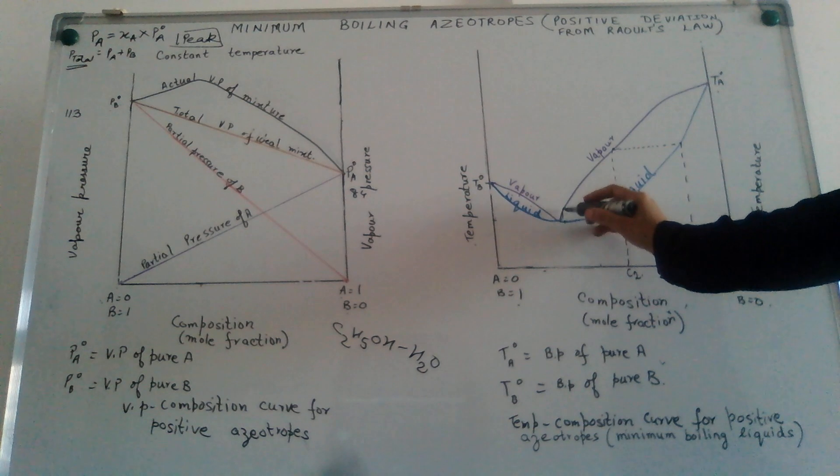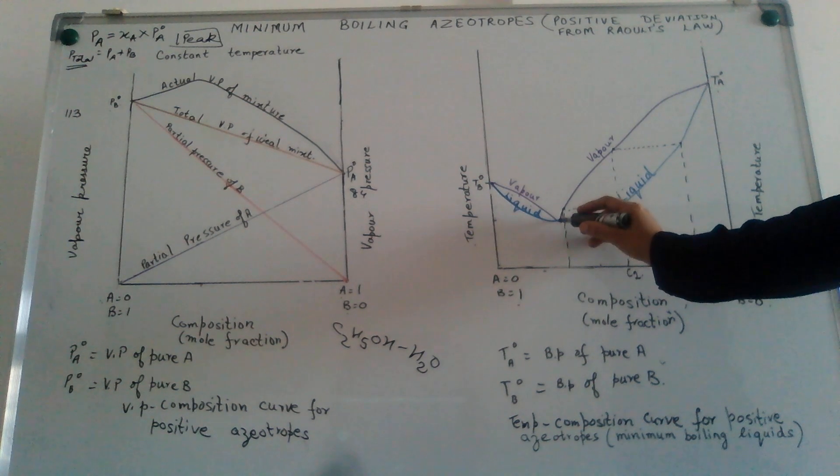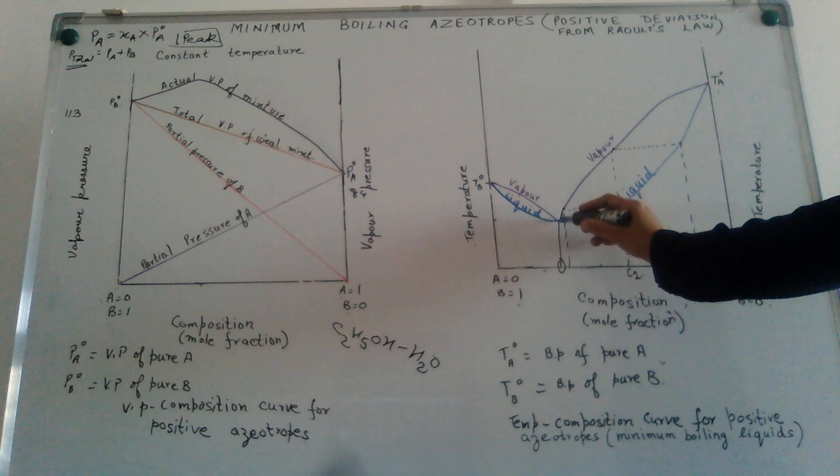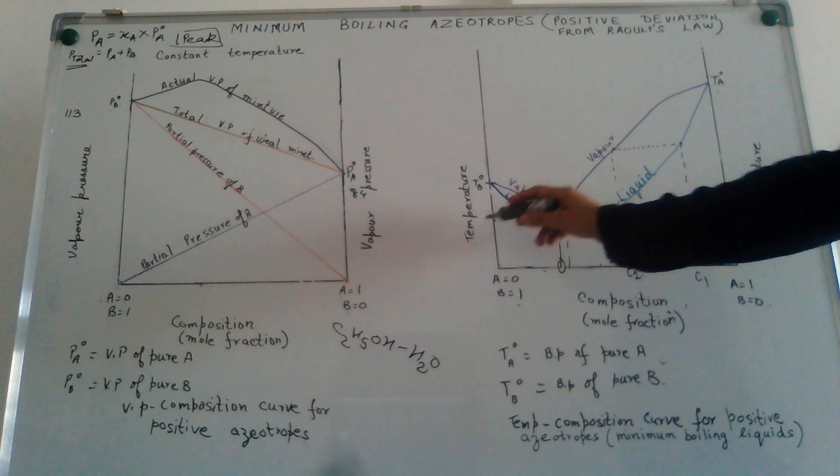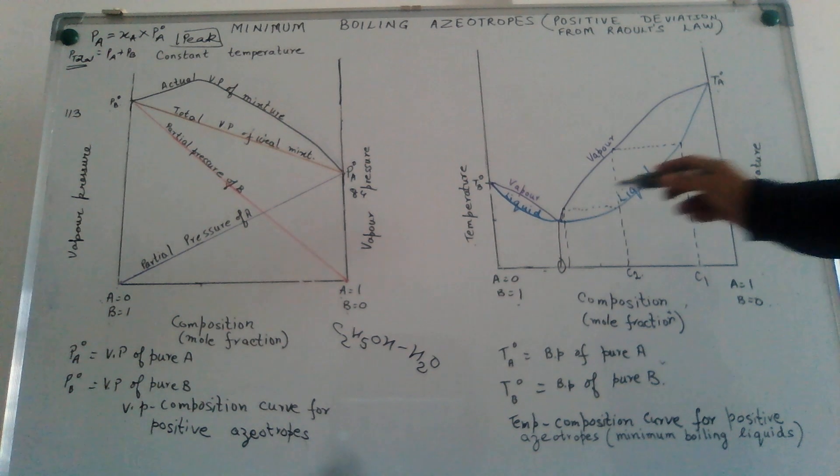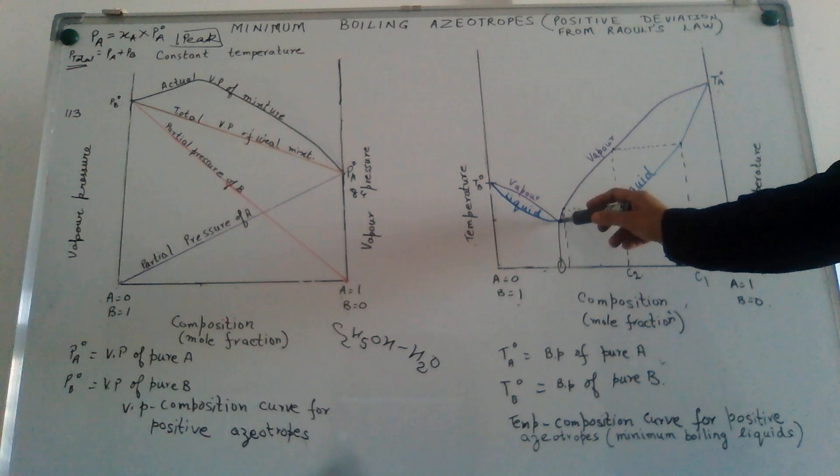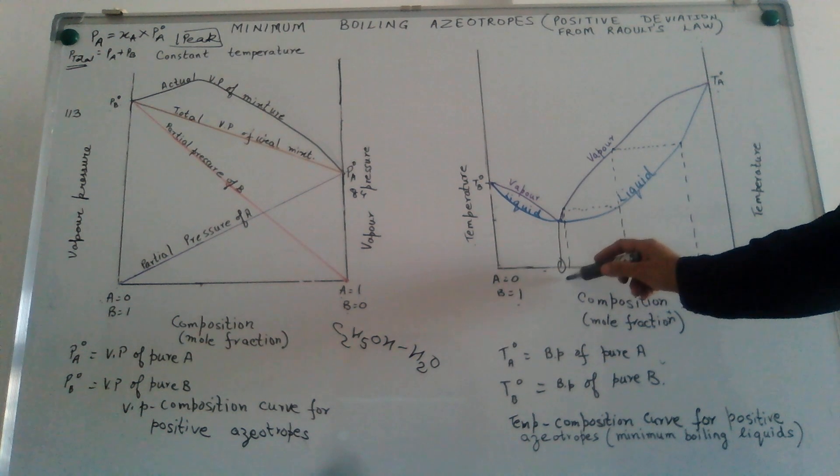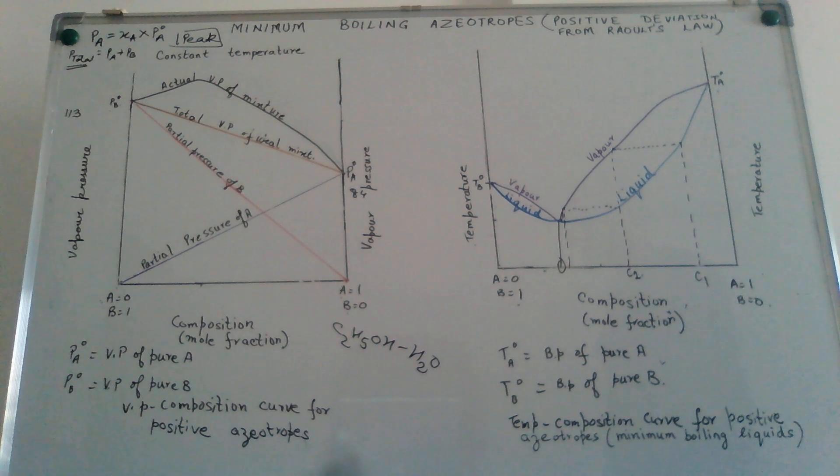We have a vapor which is again becoming richer in B. We now reach a composition where the boiling point, if you notice here, the temperature for both B and A becomes the same. In other words, by this successive heating and cooling, we are getting a composition of the liquid mixture such that the boiling point of both A and B becomes equal.